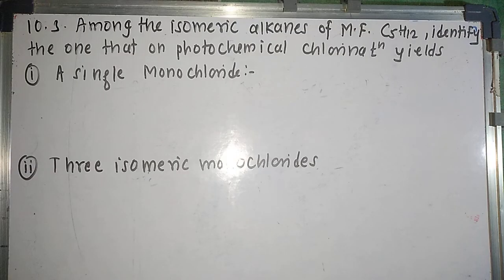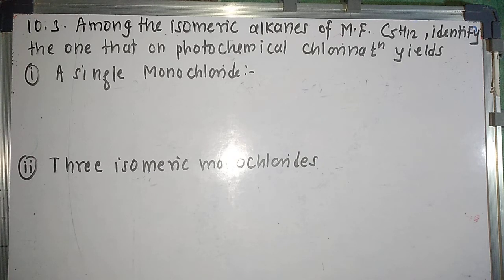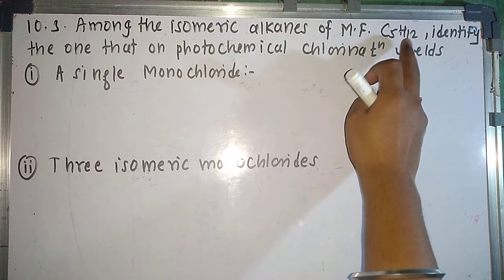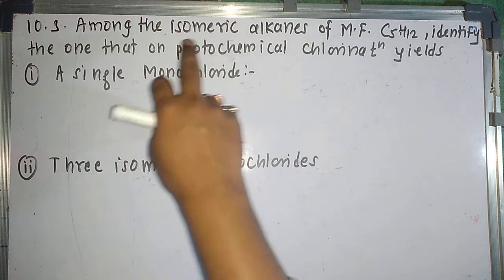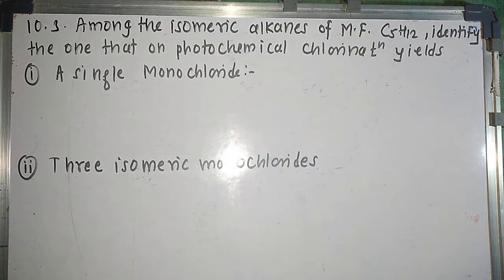The next question is 10.3: among the isomeric alkanes of molecular formula C₅H₁₂, identify the one that on photochemical chlorination gives only a single monochloride. For the molecular formula C₅H₁₂, we have different isomeric alkanes. On photochemical chlorination in the presence of UV light or sunlight, we need to find which isomer gives only one monochloride product.